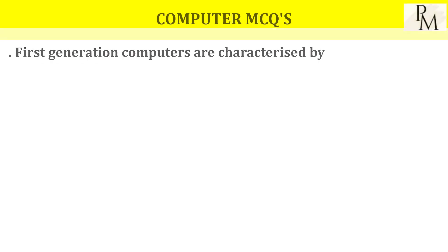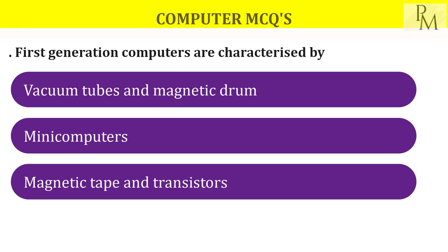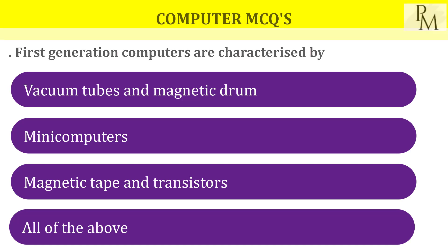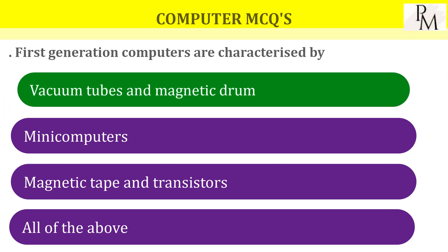First generation computers are characterized by? Right now the fifth generation is going on. For first generation computers, we basically used vacuum tubes and magnetic drums.